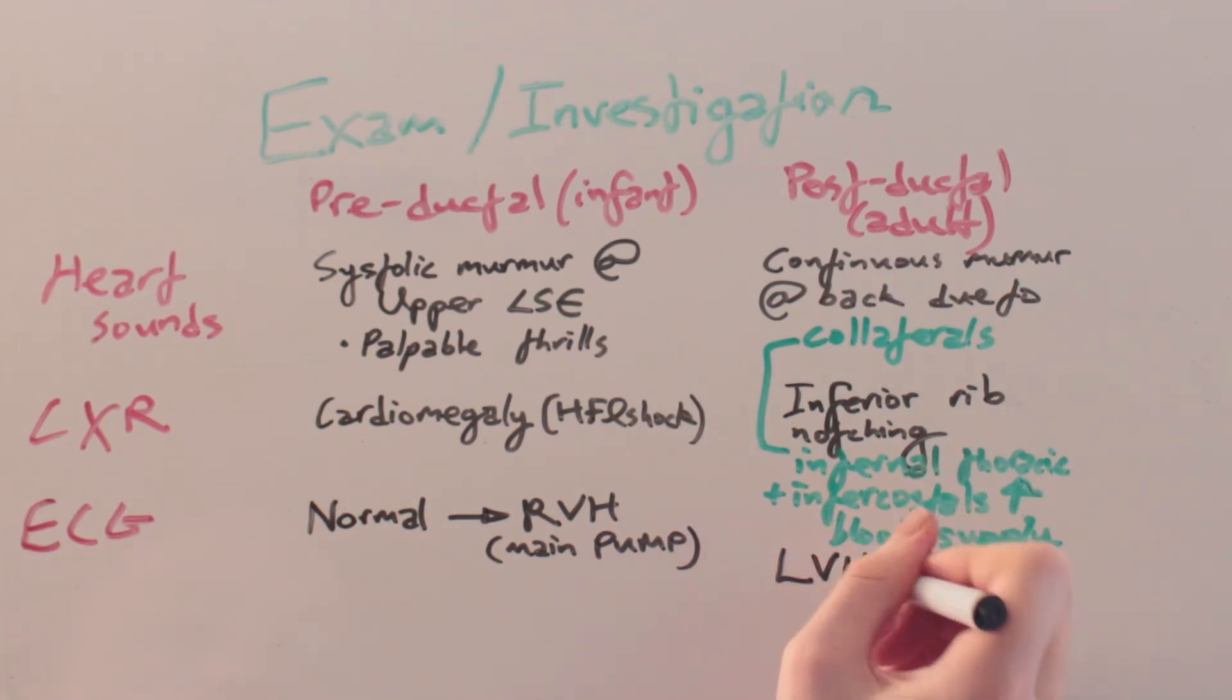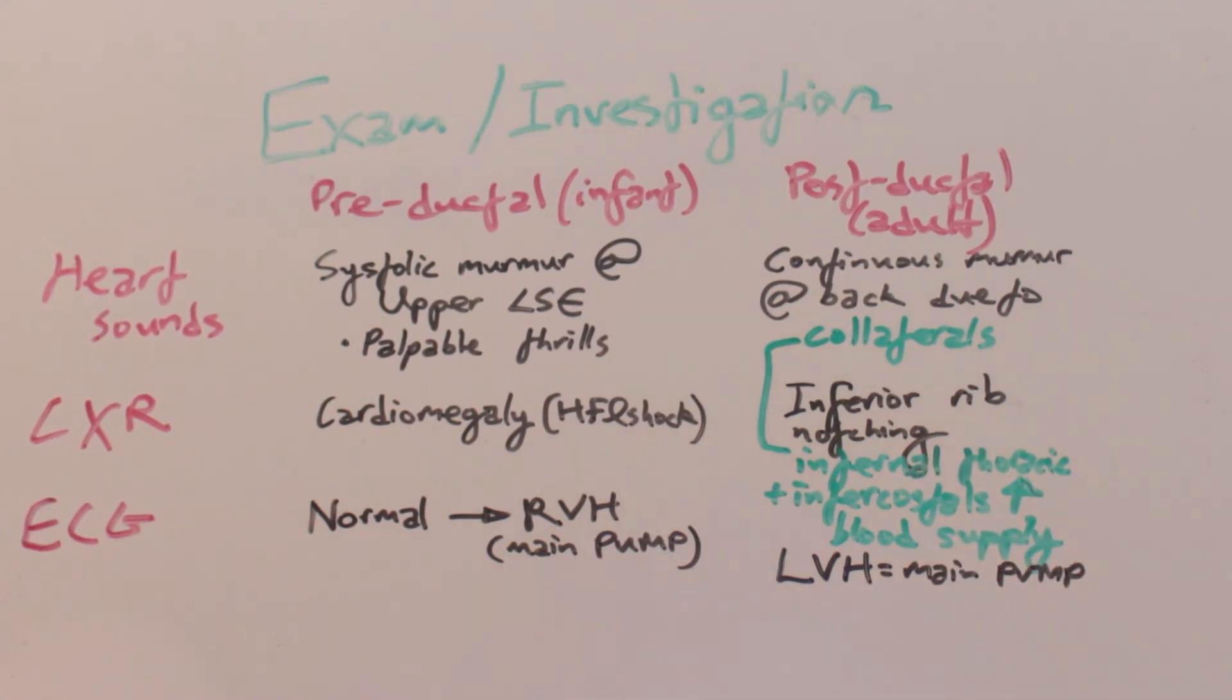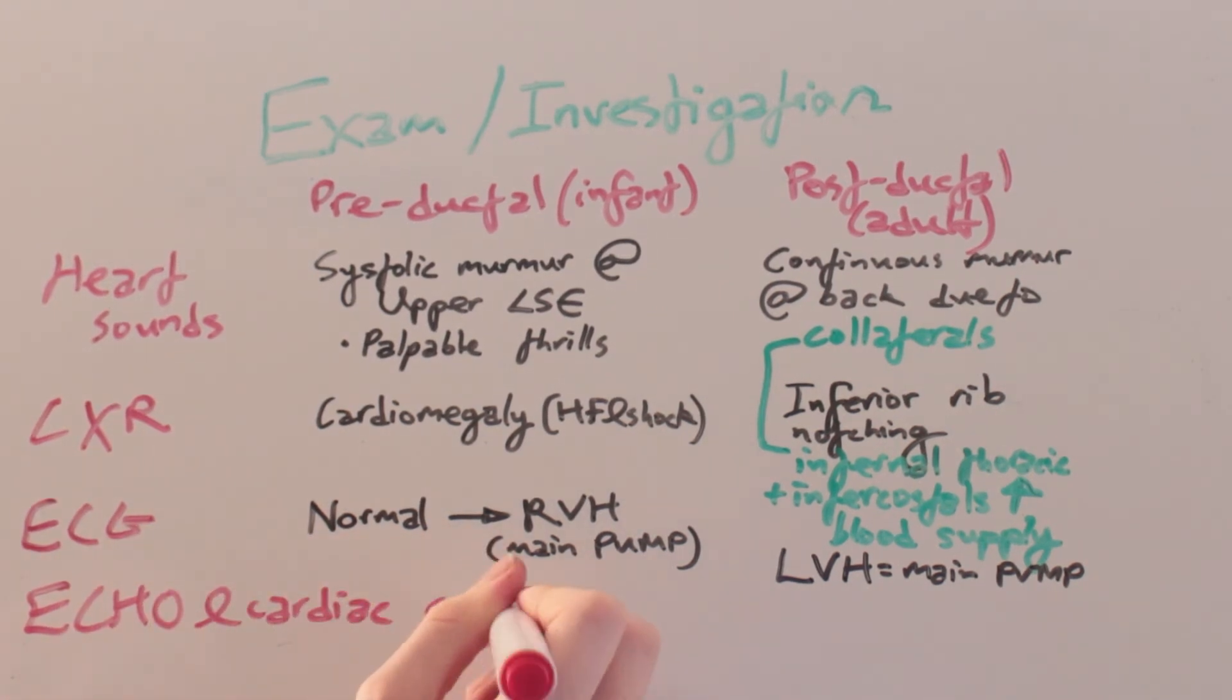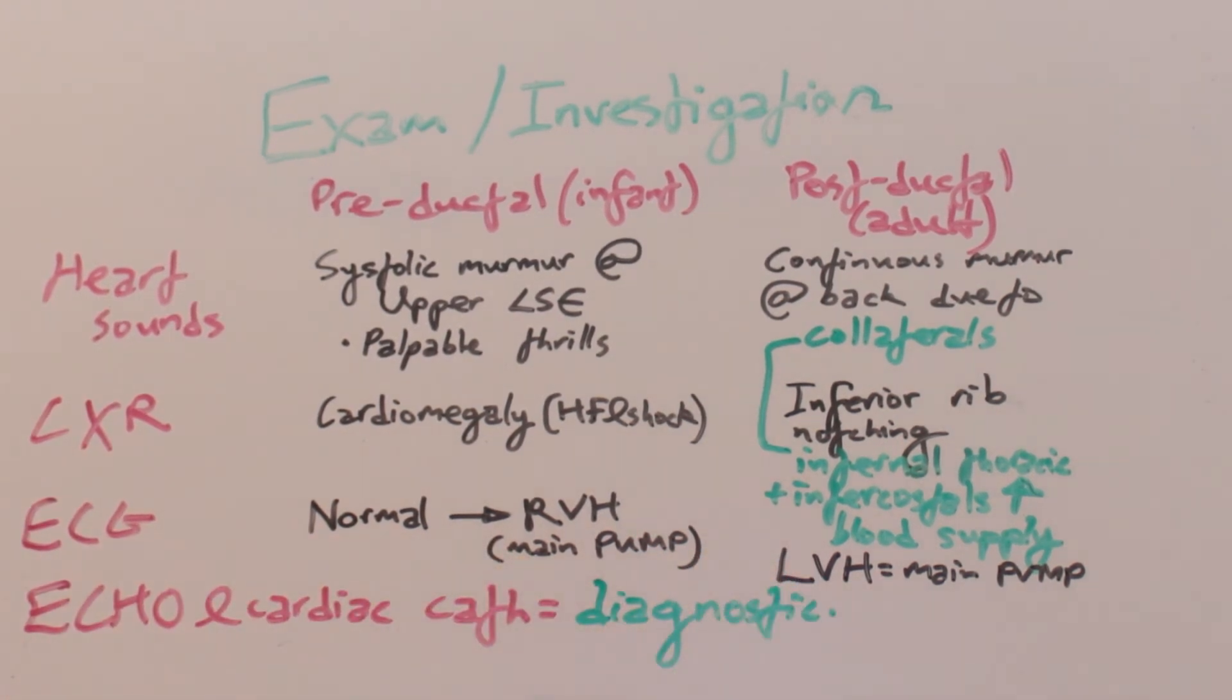In contrast, with long-standing post-ductal coarctation, left ventricular hypertrophy is seen as the left ventricle is the main systemic pump working against an outflow obstruction. Echocardiogram and cardiac catheterization are diagnostic for these conditions.